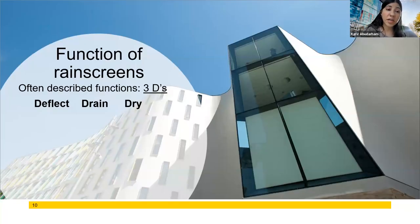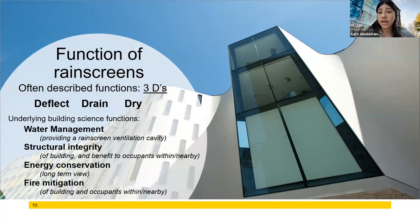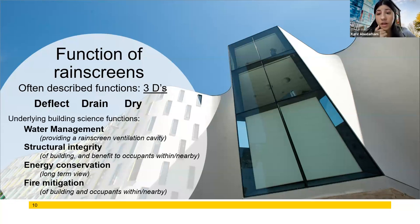As for the functions of a rain screen, we refer to them as the three Ds: we want to deflect, drain, and dry. Underlying functions are a direct result of different selections you make through the spec process. Water management is always present — if it doesn't have a vent cavity, it's not a rain screen. Structural integrity is a function of which cladding you choose. Some facade materials have things like bomb blast testing and missile impact testing through Miami-Dade, and they all may look like a cedar plank but they won't all be up to the performance standards you need.